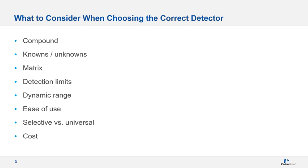As one example: perhaps you don't have many components of interest in your sample, but your sample matrix is interfering with them. You should consider using the mass spectrometer. Even though we will be covering the mass spectrometer in the fall semester, a mass detector has better sensitivity, so even if you have only known compounds you may need the MS for sensitivity.